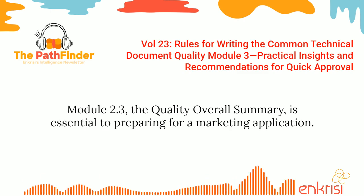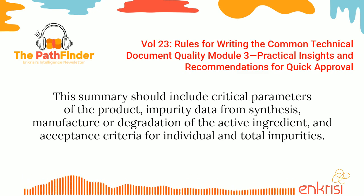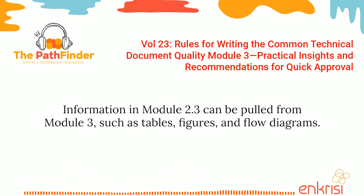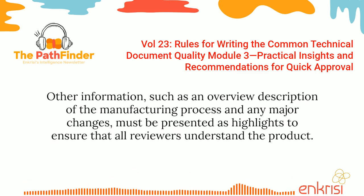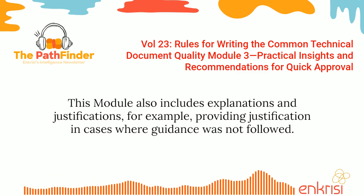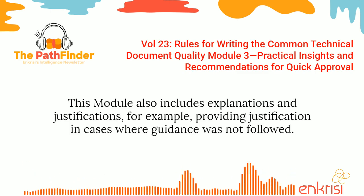Module 2.3, the Quality Overall Summary, is essential to preparing for a marketing application. This summary should include critical parameters of the product, impurity data from synthesis, manufacture or degradation of the active ingredient, and acceptance criteria for individual and total impurities. Information in Module 2.3 can be pulled from Module 3, such as tables, figures, and flow diagrams. Other information, such as an overview description of the manufacturing process and any major changes, must be presented as highlights to ensure that all reviewers understand the product. This module also includes explanations and justifications — for example, providing justification in cases where guidance was not followed.